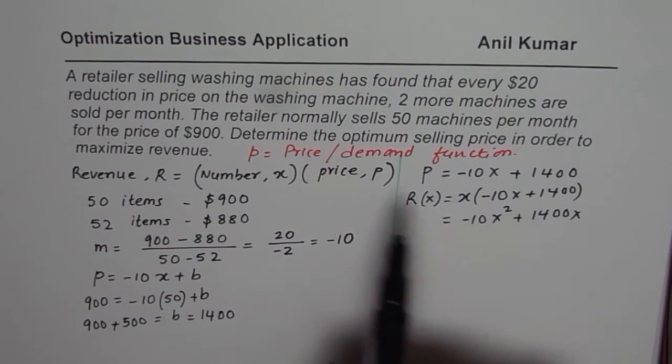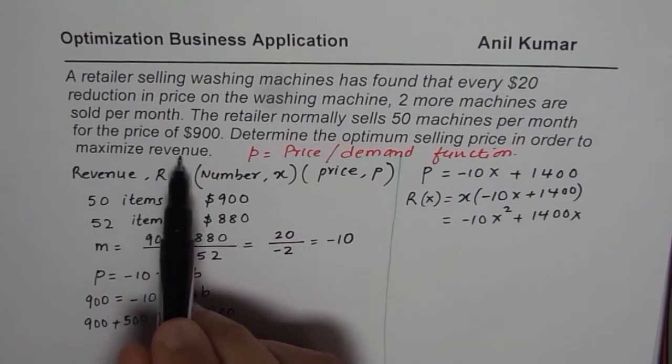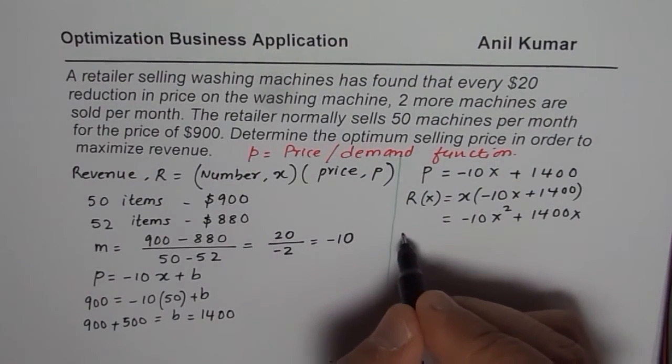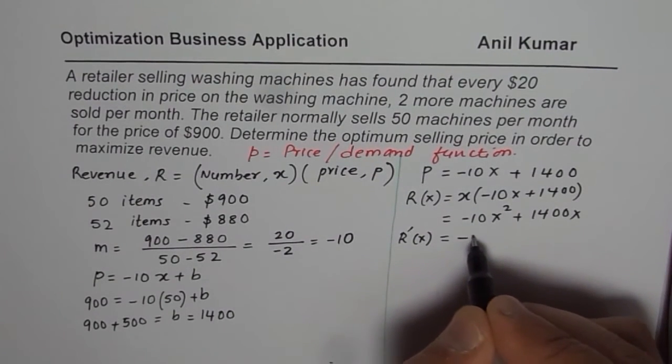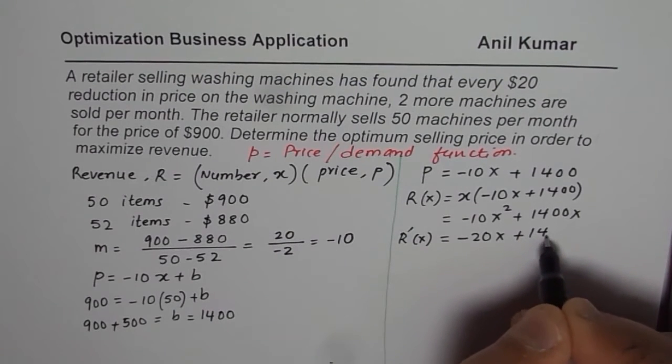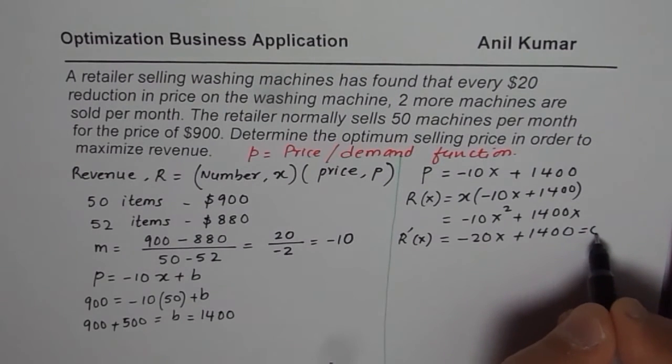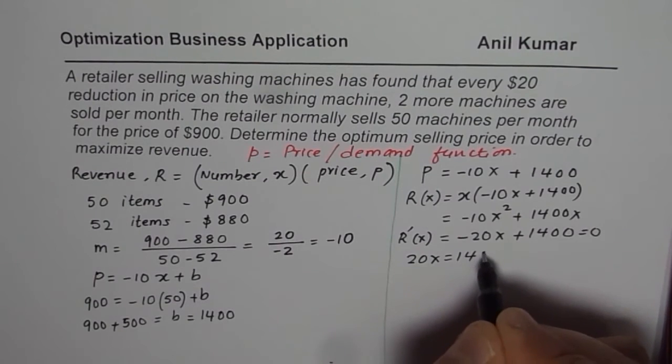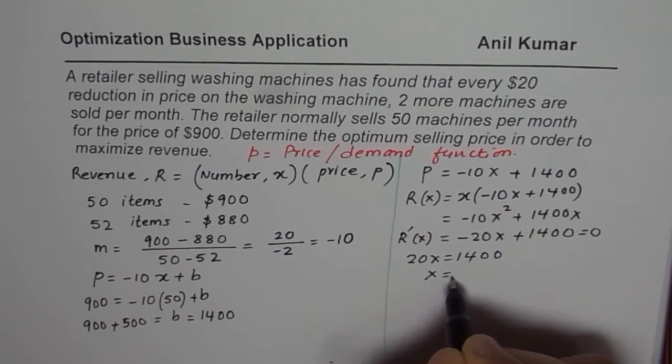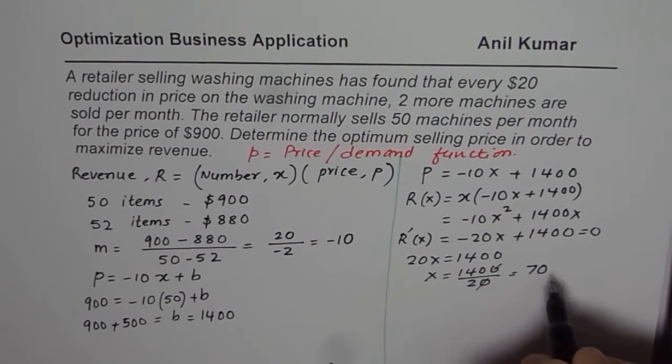What do we need to know? Determine the optimum selling price in order to maximize revenue. To maximize revenue, we can find its derivative equated to 0. We will find derivative which is minus 20X plus 1400. The critical point here will be equating this to 0. We get 20X equals to 1400 or X is equals to 1400 divided by 20. That gives us X is 70.